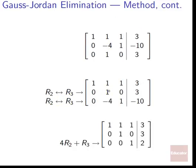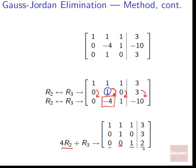With the 1 now in place, we need to turn the entry below it into zero. We add 4 times row two to row three: 4 times 1 added to negative 4 gives zero; zero stays zero; zero stays zero for the next position; and 3 times 4 added to negative 10 gives 2. At this point we have ones along the main diagonal and zeros below — but not yet zeros above.